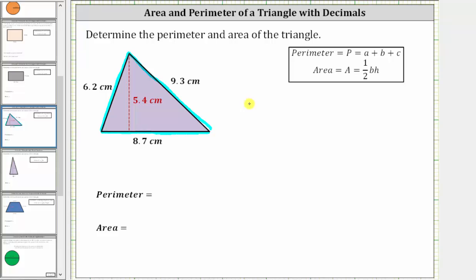So again, the perimeter P is equal to 6.2 plus 9.3 plus 8.7 centimeters.